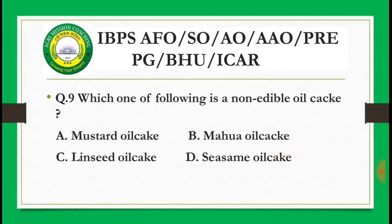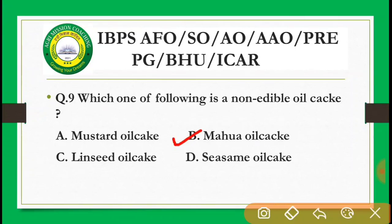Next question: Which one of the following is a non-edible oil cake? Options are: mustard oil cake, mahua oil cake, linseed oil cake, neem oil cake. The correct answer is B — mahua. Mahua is a non-edible oil cake and is not used for feeding animals.